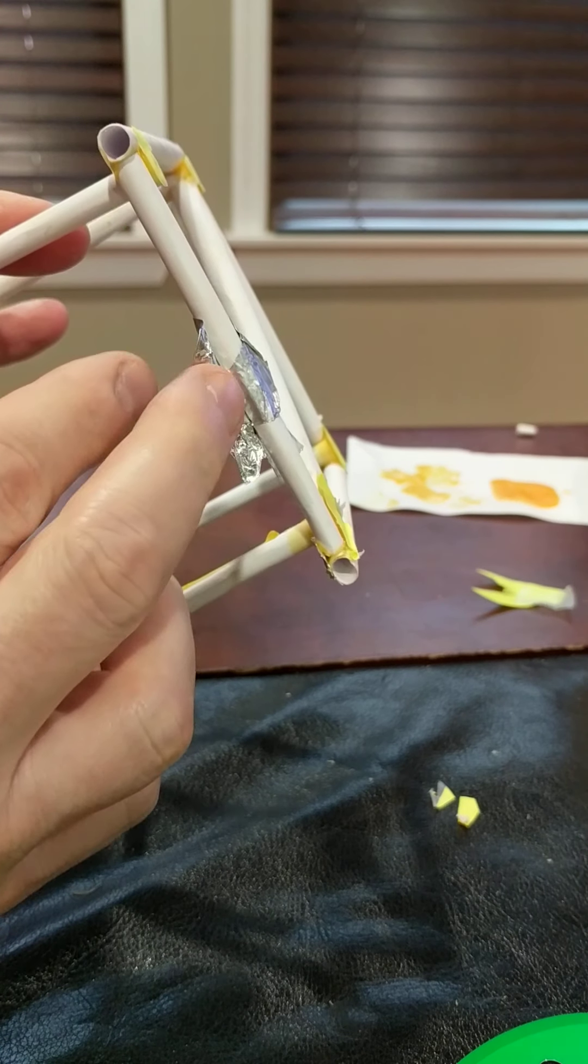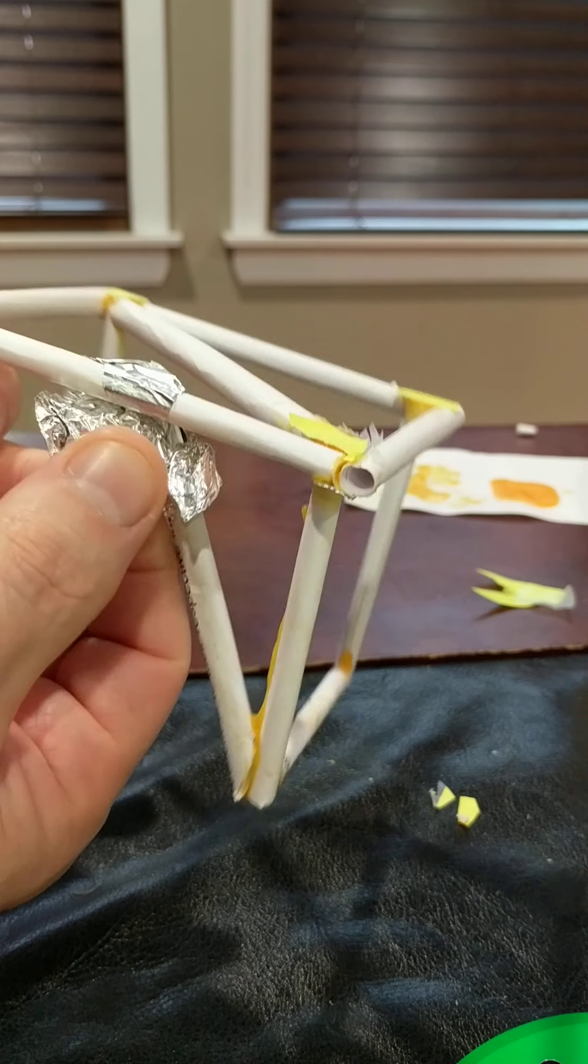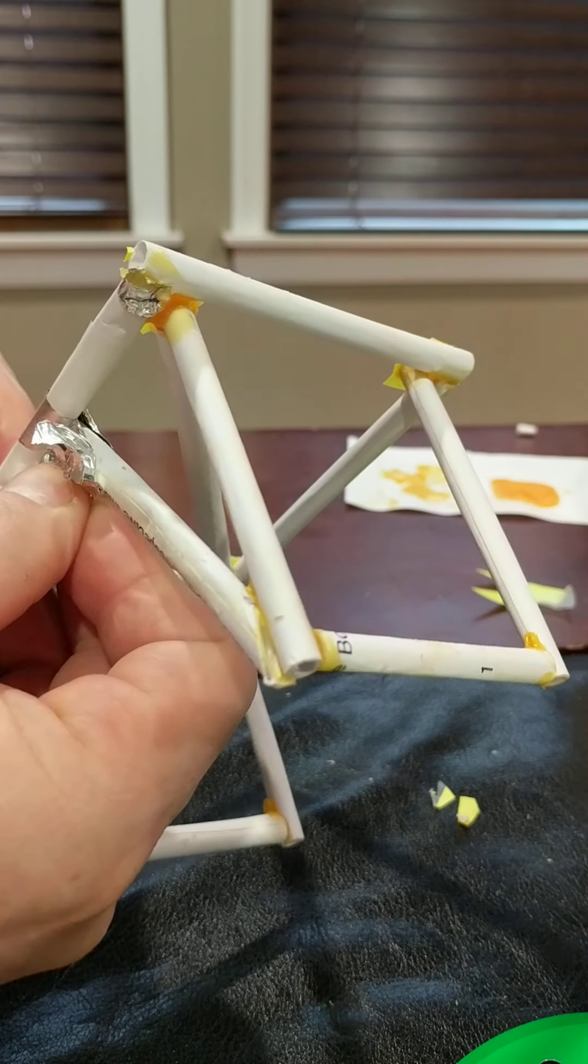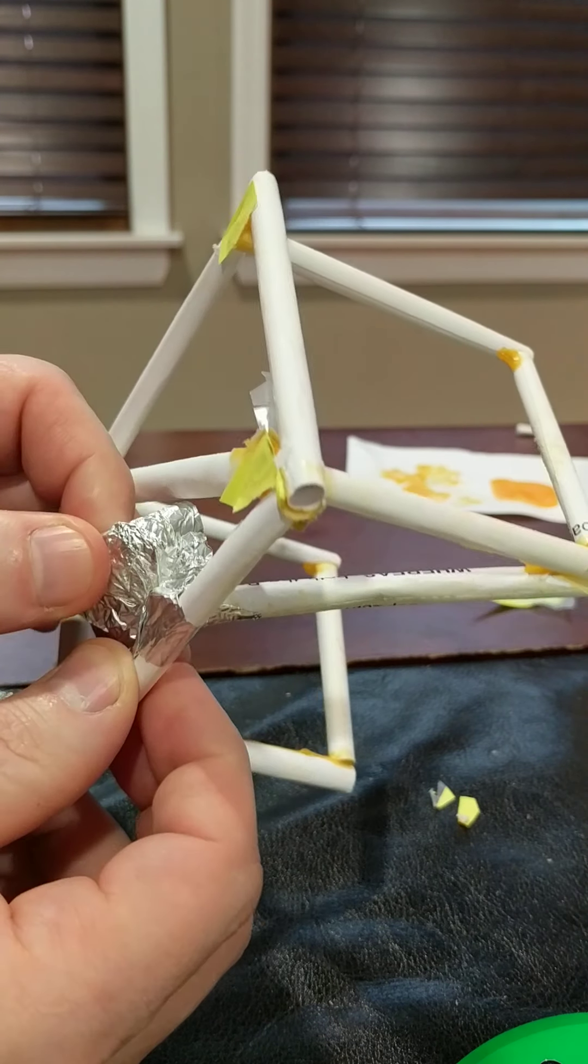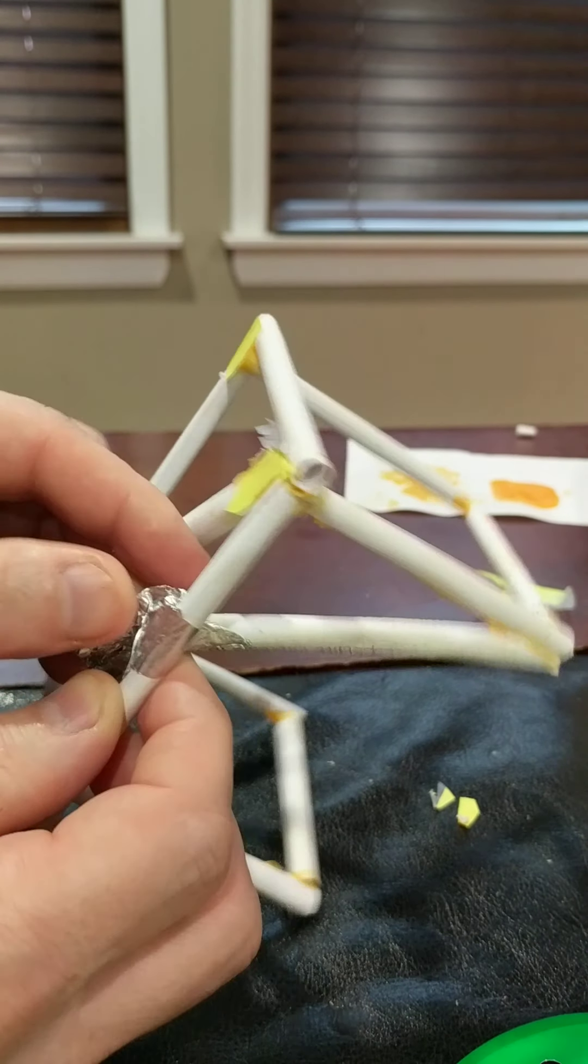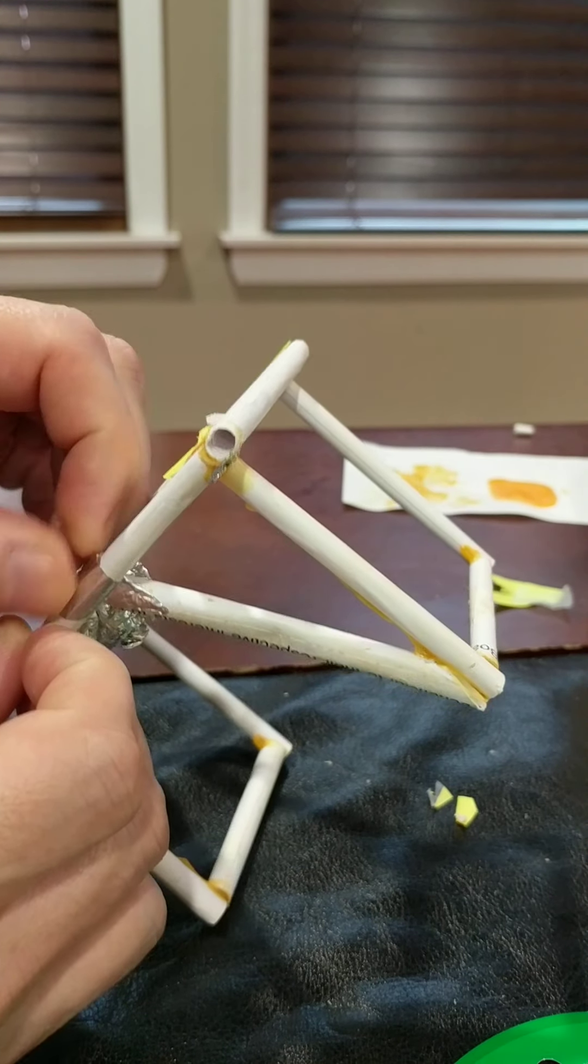This was a piece of tinfoil that I used as a clamp to keep this one joint together while it was drying. So rather than using tape, I chose to use the tinfoil just because it was available.